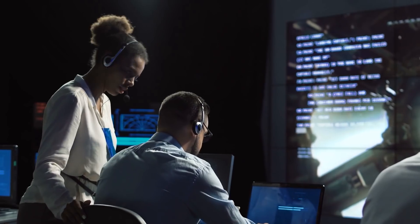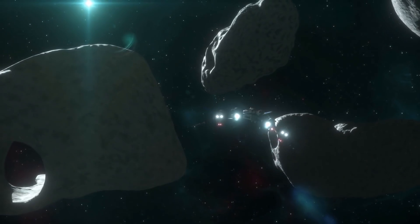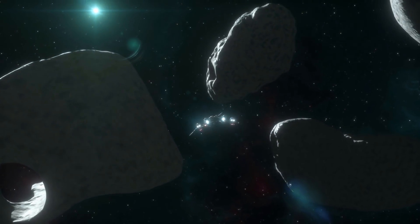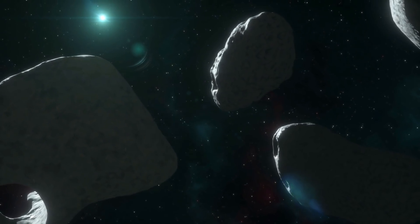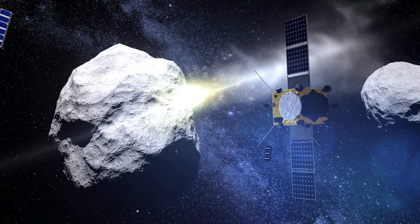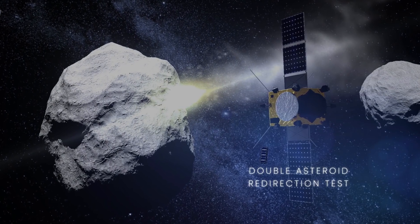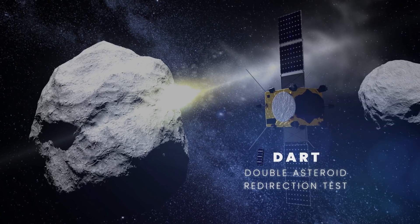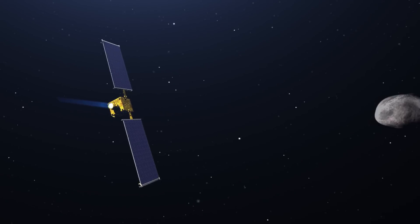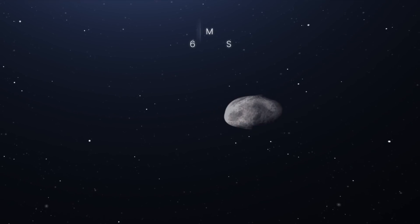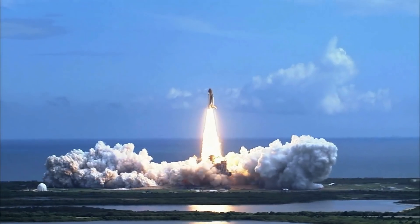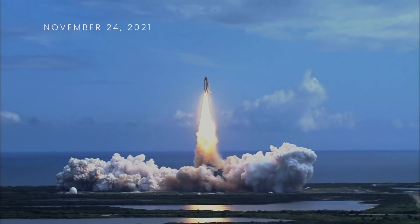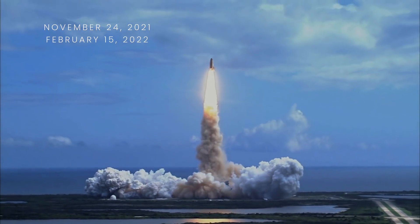So now, NASA plans to smash a spacecraft about the size of a refrigerator into the smaller Didymoon asteroid that was mentioned earlier. The mission is called Double Asteroid Redirection Test, or DART. The idea is to take this half-ton spacecraft and crash it into Didymoon around 4 miles per second. The launch will take place sometime between November 24, 2021 and February 15, 2022.